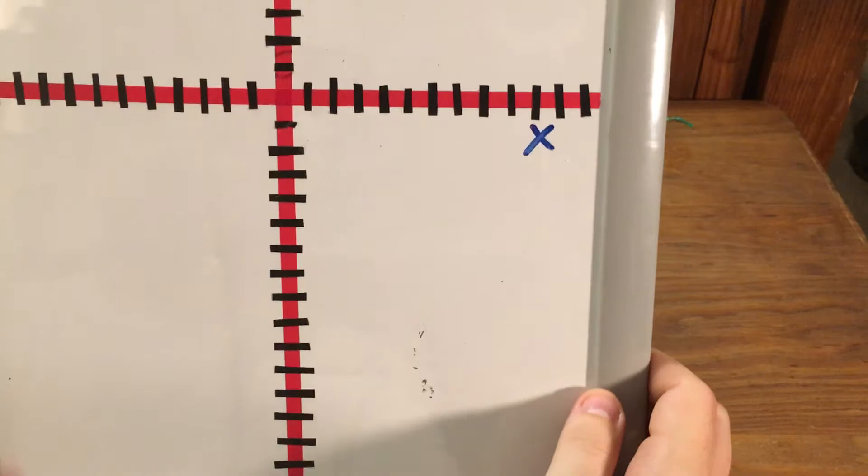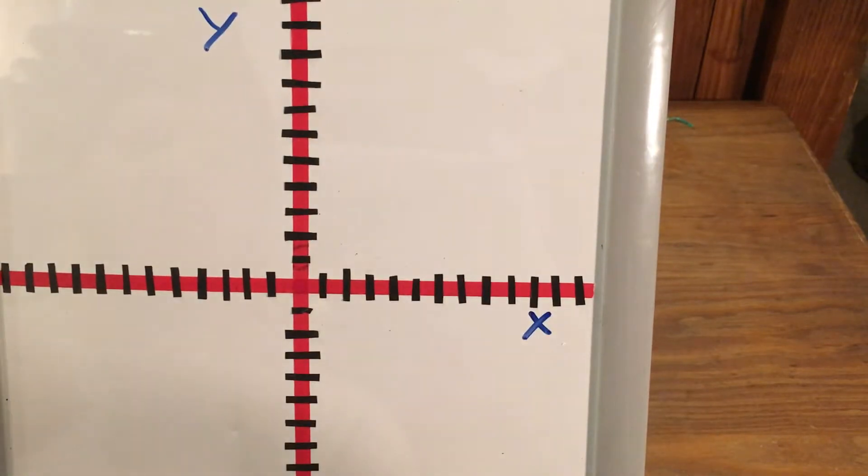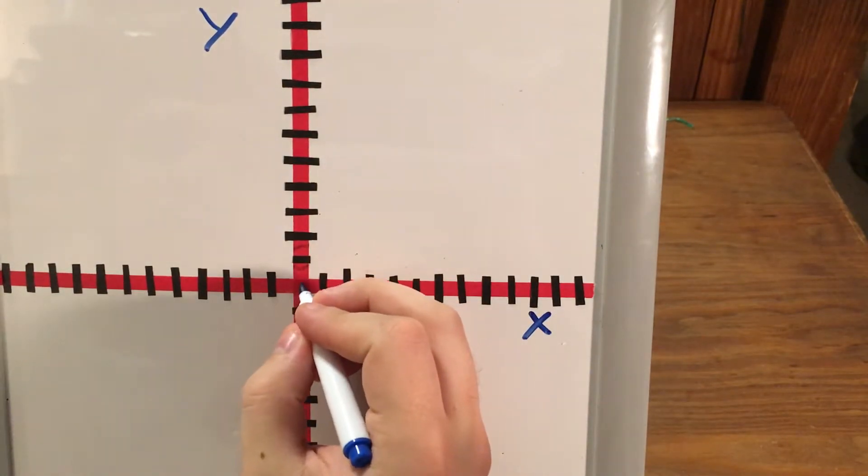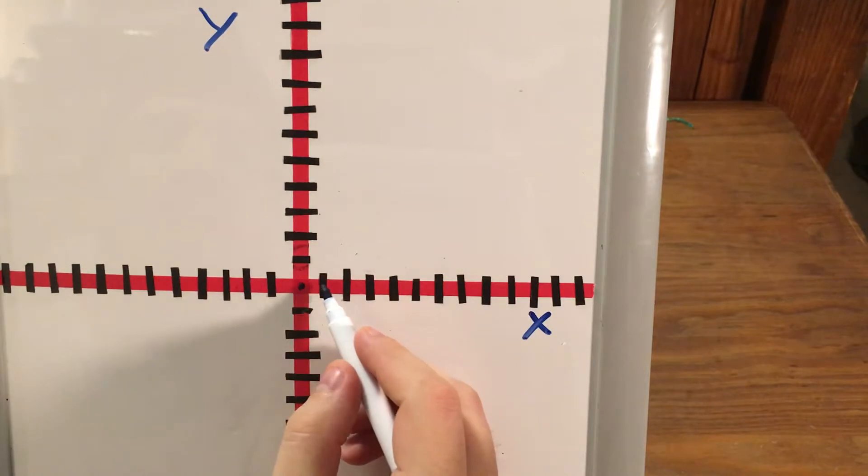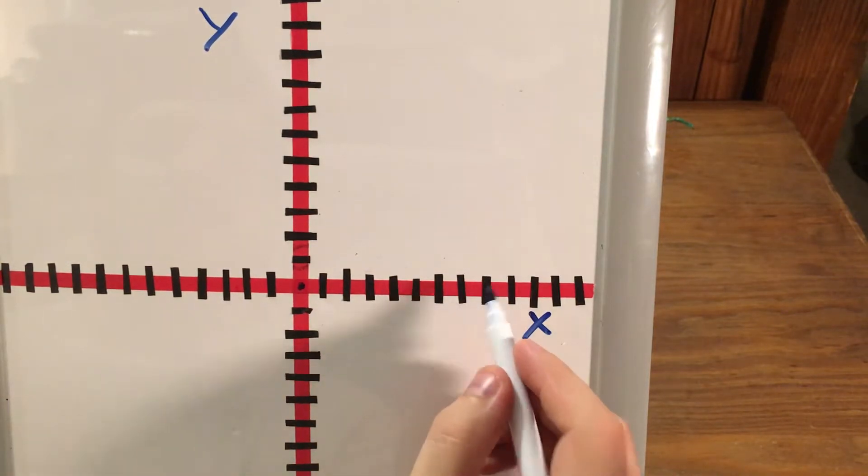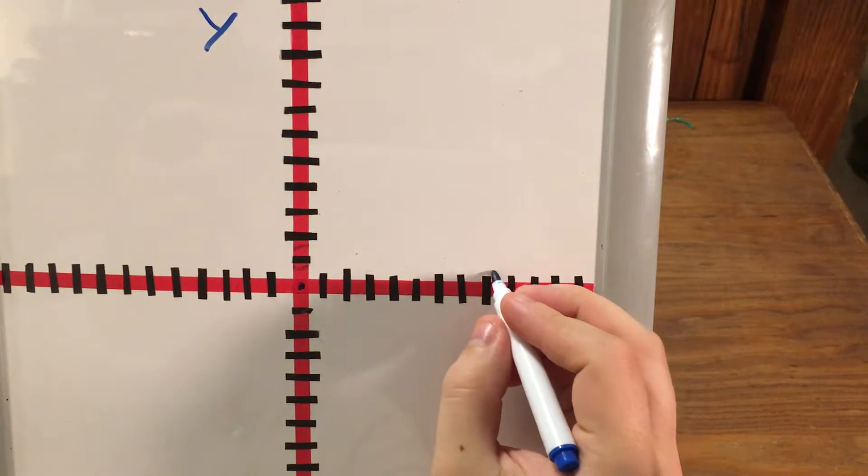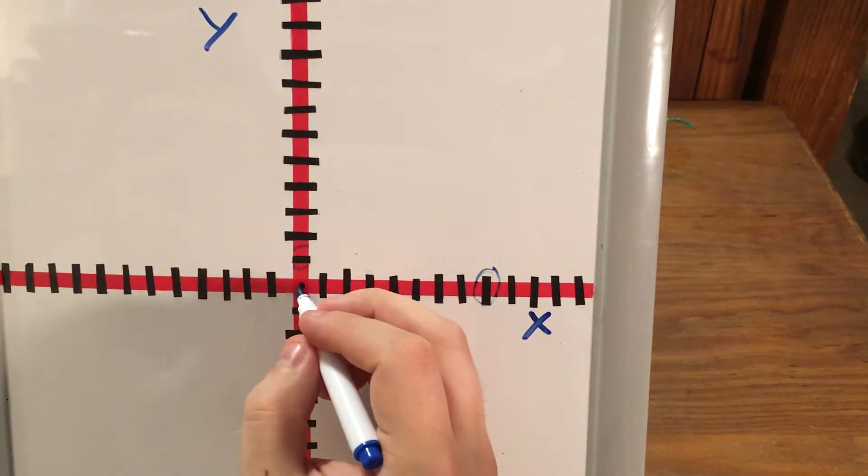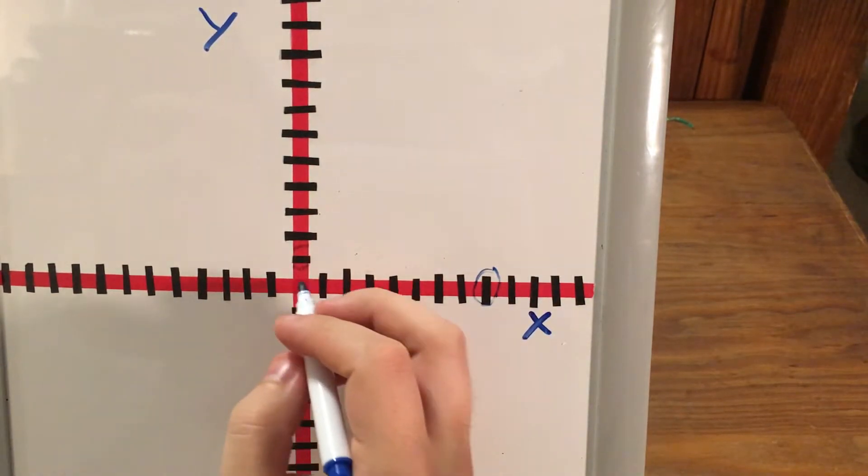Now I'm ready to test out choice C, where my points are (0, 0), so right here on the origin. (8, 0), so 1, 2, 3, 4, 5, 6, 7, 8 and 0. That's there. And then (0, 8). That means I go left or right 0 and up 8.